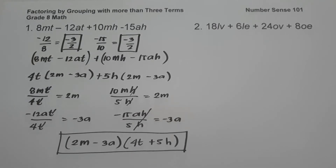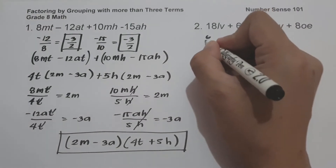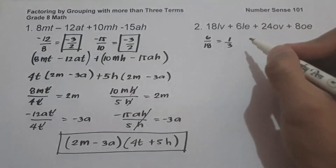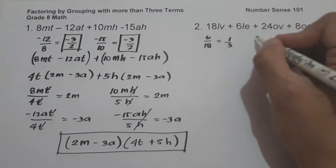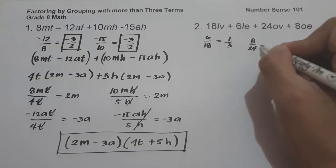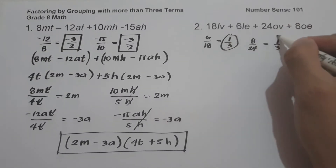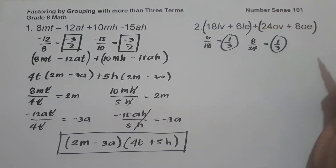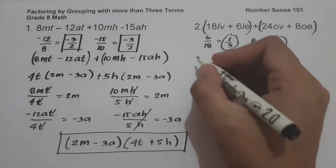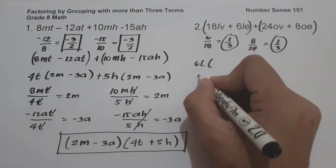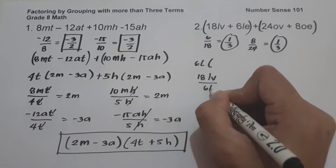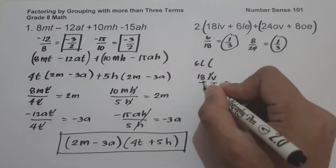On number 2 we have 18lv plus 6le plus 24ov plus 8oe. To check: 6 over 18 is 1/3, and 8 over 24 is also 1/3. Since the ratios are the same, we solve using factoring by grouping. The greatest common factor of 18lv and 6le is 6l. So 18lv divided by 6l: cancel l, 18v divided by 6 gives 3v.